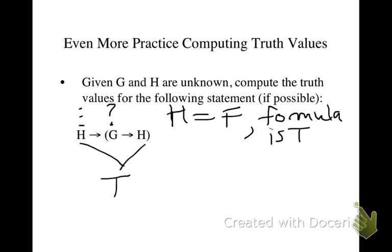Well, let's see what happens if H is true. If we get the same result, then we're good to go. So suppose H equals true. Well, if H is true, then G arrow H is true.